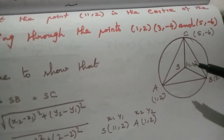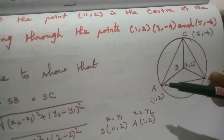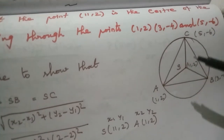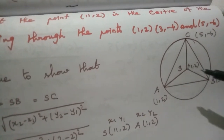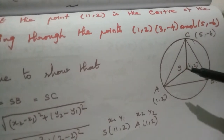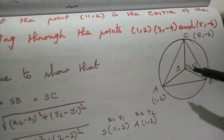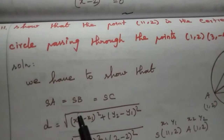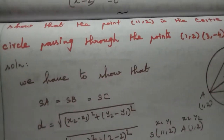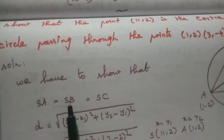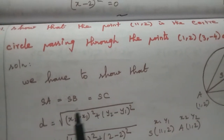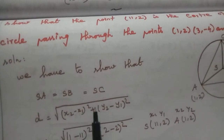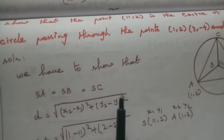Let S be (11,2). So the center is point S, and A, B, C are the three points on the circle. We need to show that SA = SB = SC. The distance formula is: d = √[(x2 - x1)² + (y2 - y1)²].